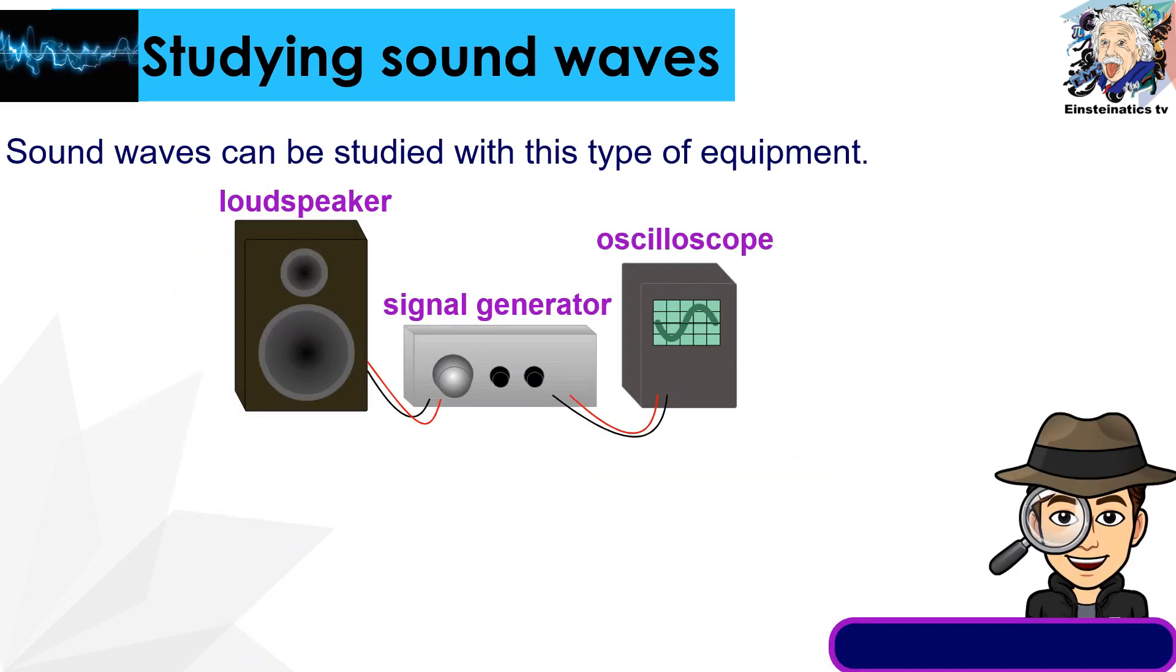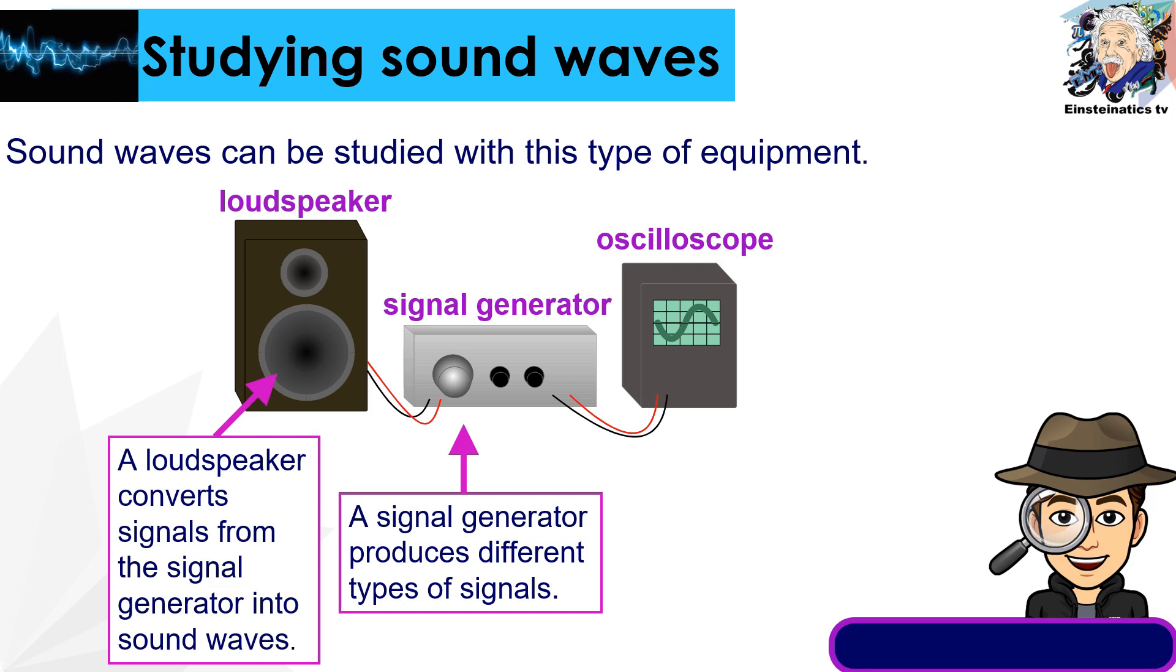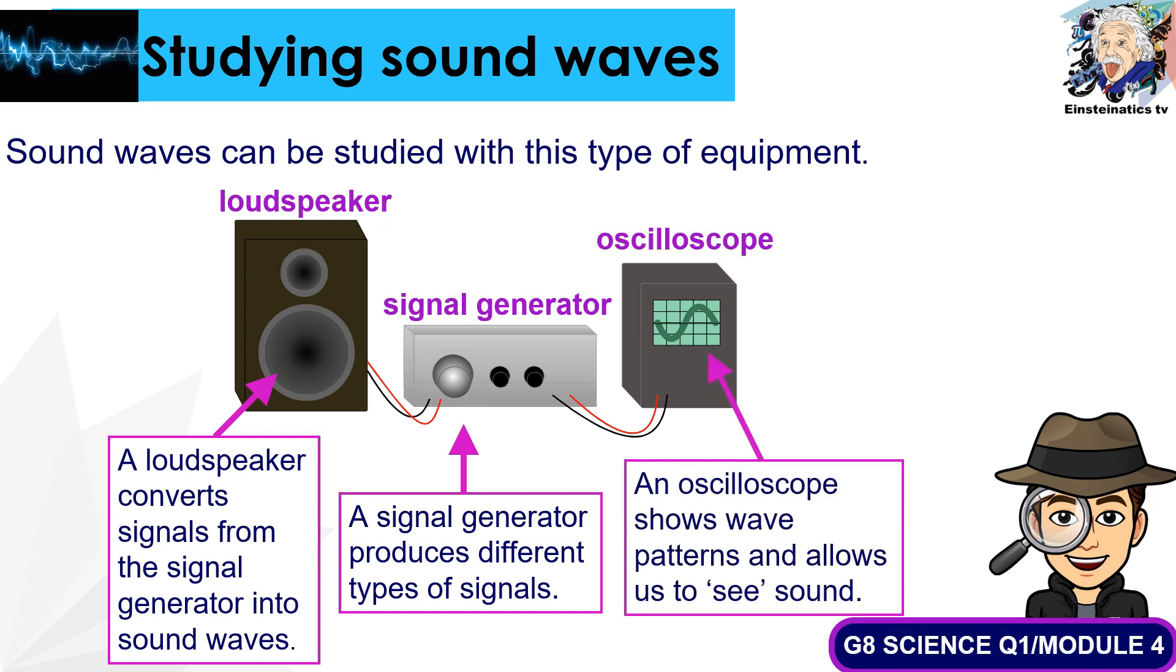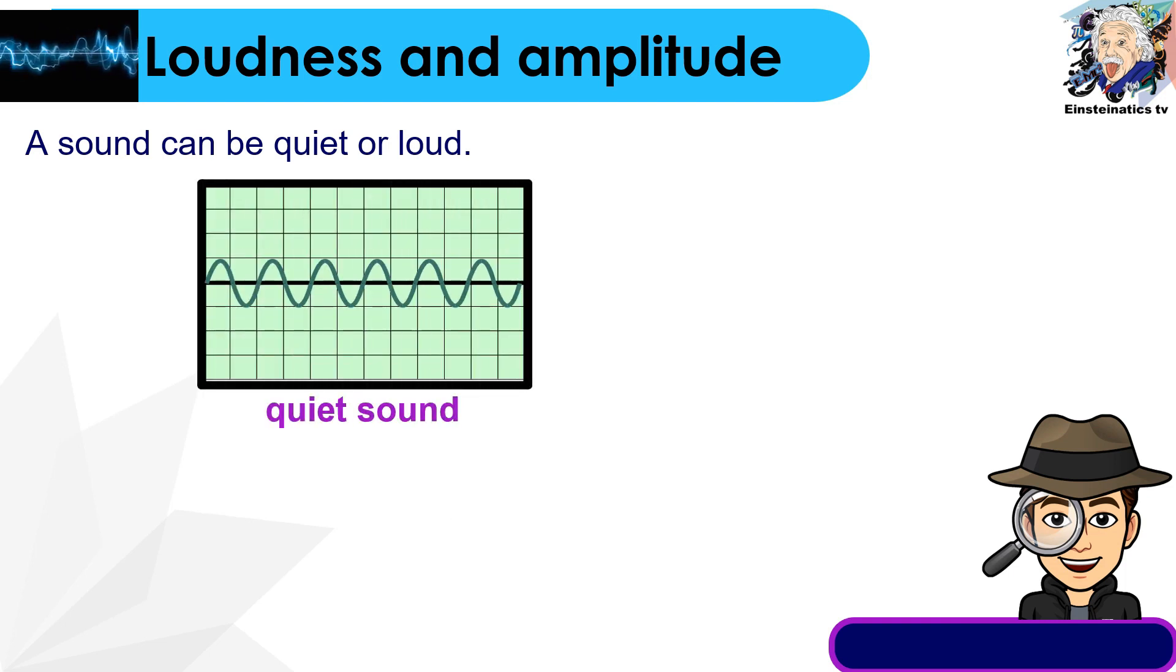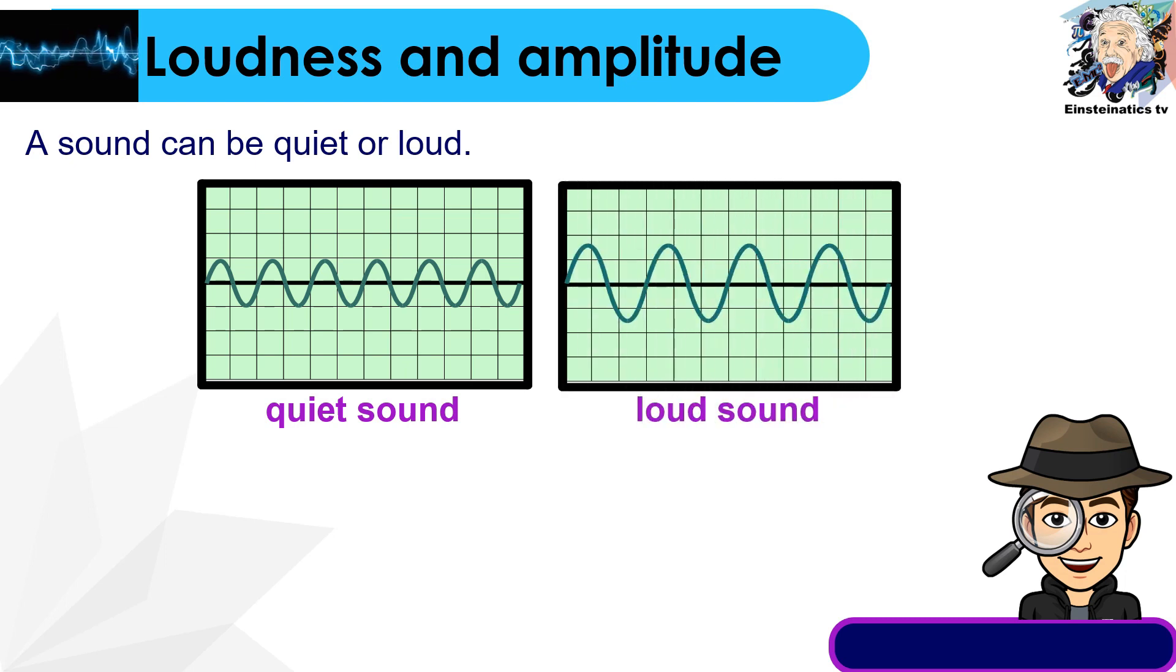When studying sound waves, we can use this type of equipment: the loudspeaker, the signal generator, and the oscilloscope. The loudspeaker converts signals from the signal generator into sound waves. On the other hand, the oscilloscope shows the wave patterns and allows us to see sound through converting sound into a pattern that we can see.